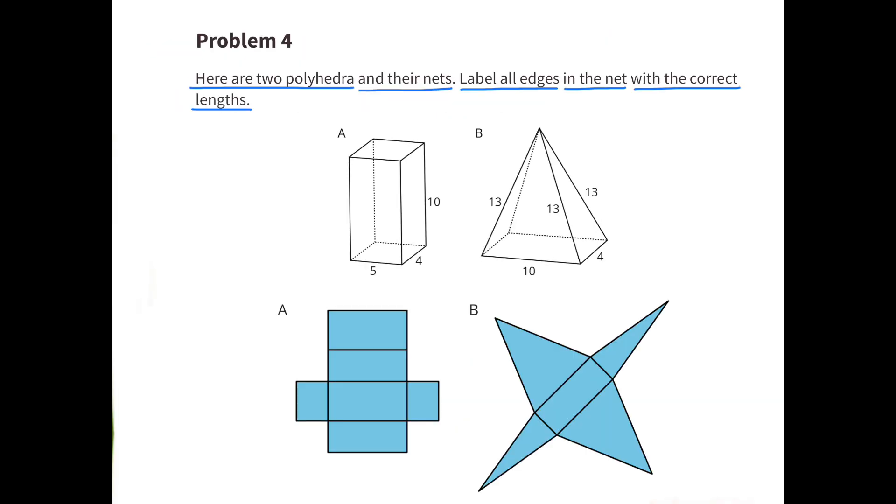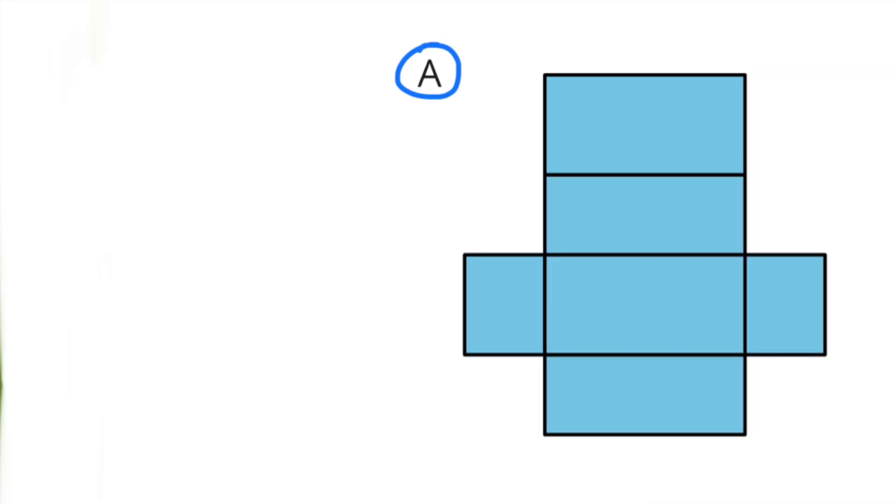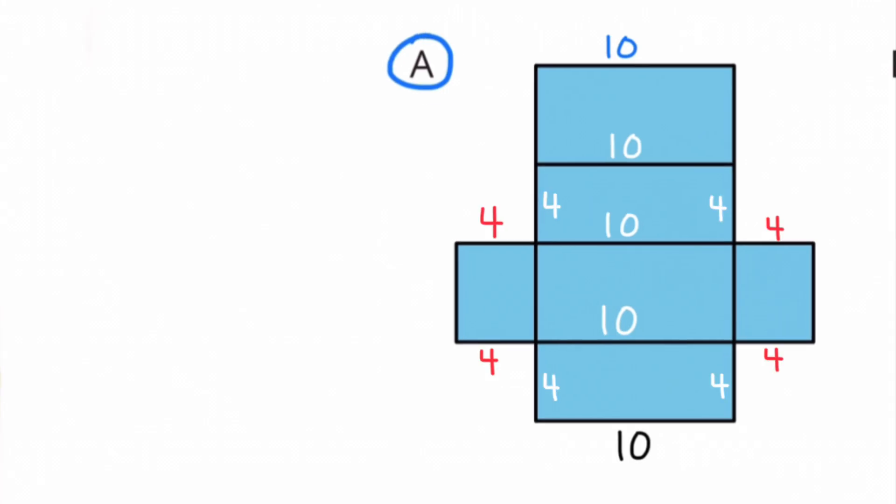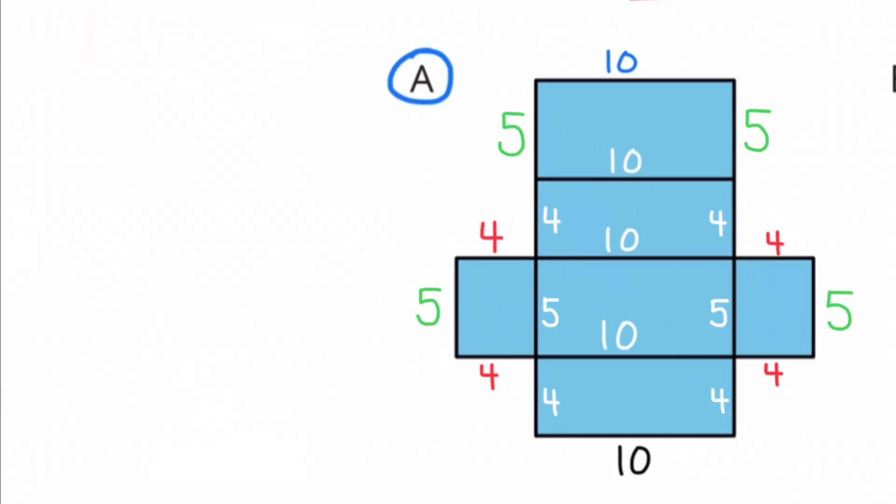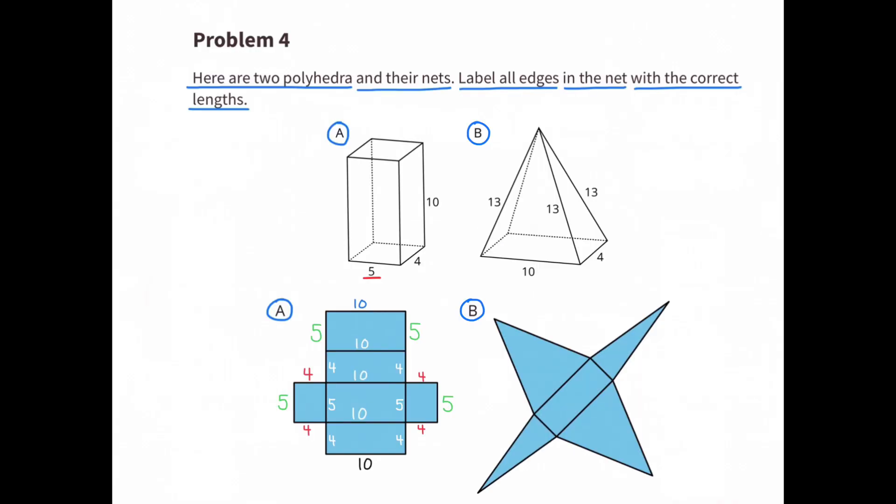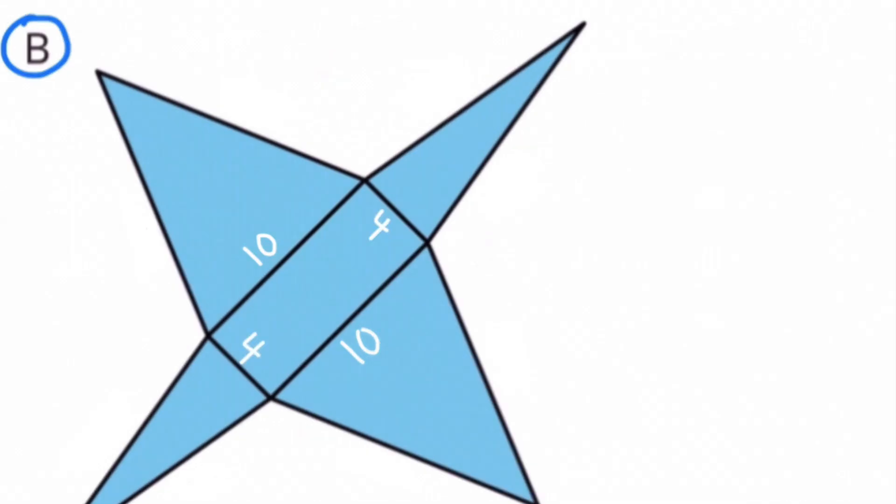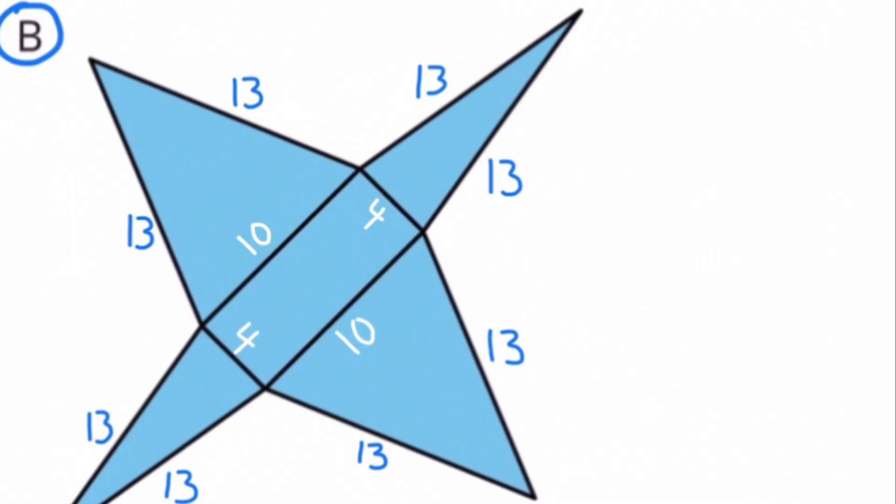Number 4. Here are 2 polyhedra and their nets. Label all edges in the net with the correct lengths. Part A: These lengths are 10 units, these lengths are 4 units, and these lengths are 5 units. Part B: These lengths are 10 units, these lengths are 4 units, and these lengths are 13 units.